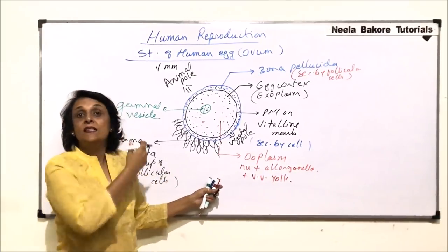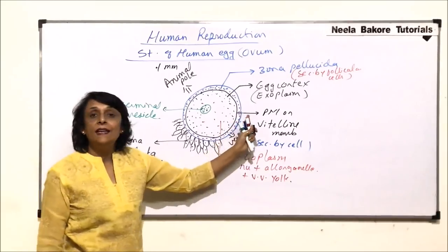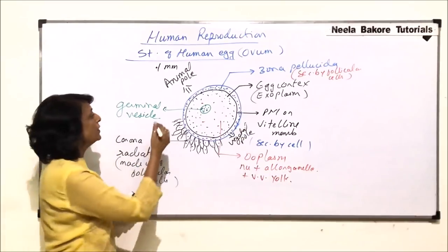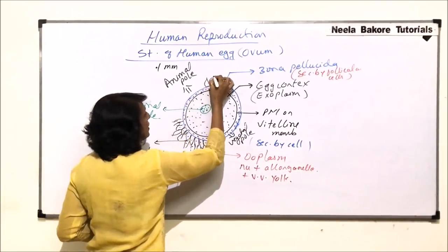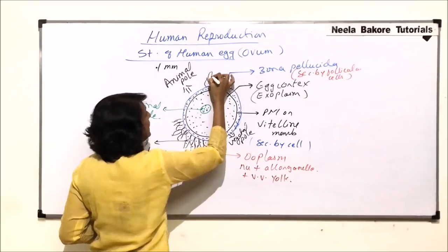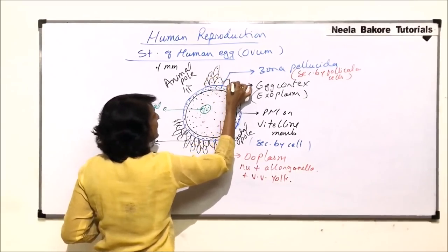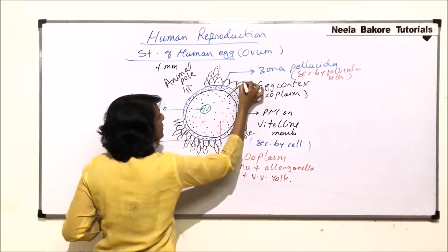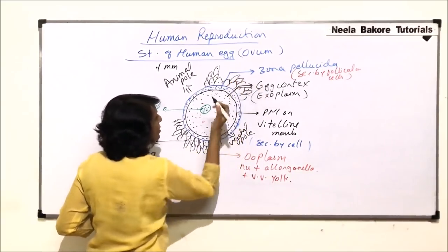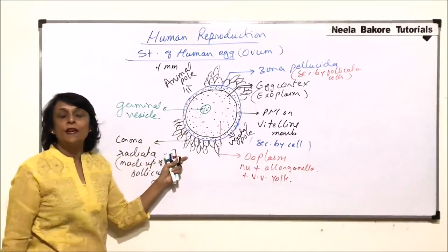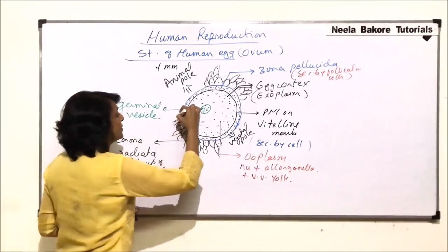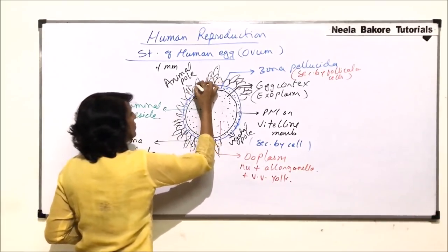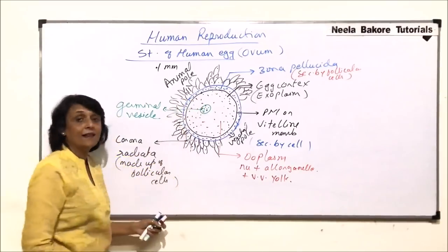So to summarize the three layers: one layer is secreted by the cell itself, the second layer is secreted by the follicular cells, and the third is actually made up of follicular cells. When we draw the corona radiata, it appears as if the cells are radiating from the central part outward. These corona radiata follicular cells surround the egg completely.